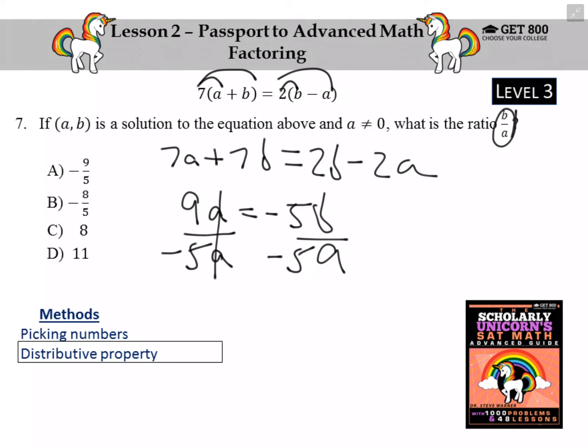Notice that the A's cancel on the left and the negative 5's cancel on the right. And we're left with the fact that B over A is equal to 9 over negative 5, which is equivalent to negative 9 fifths, choice A.